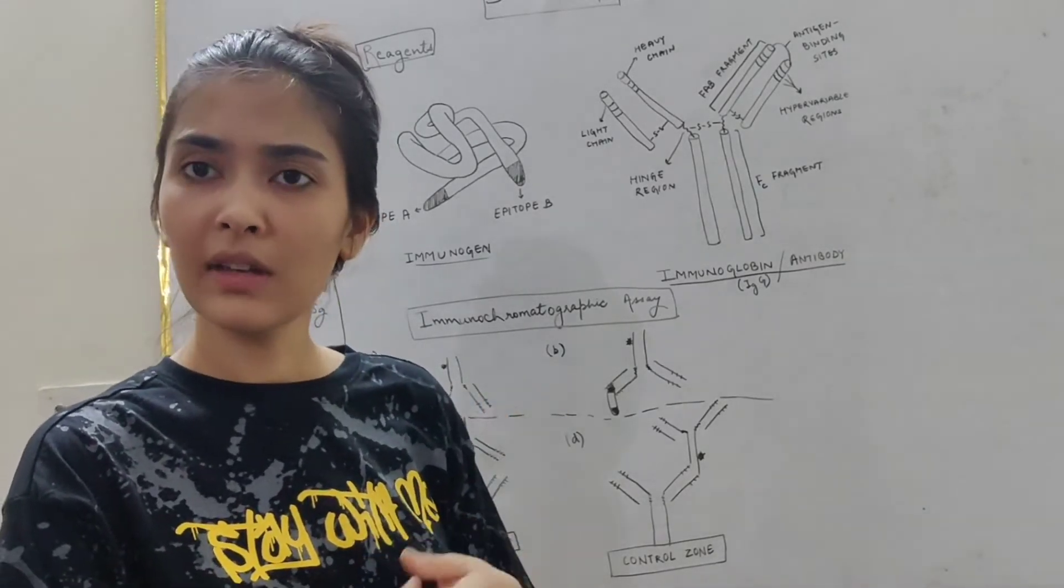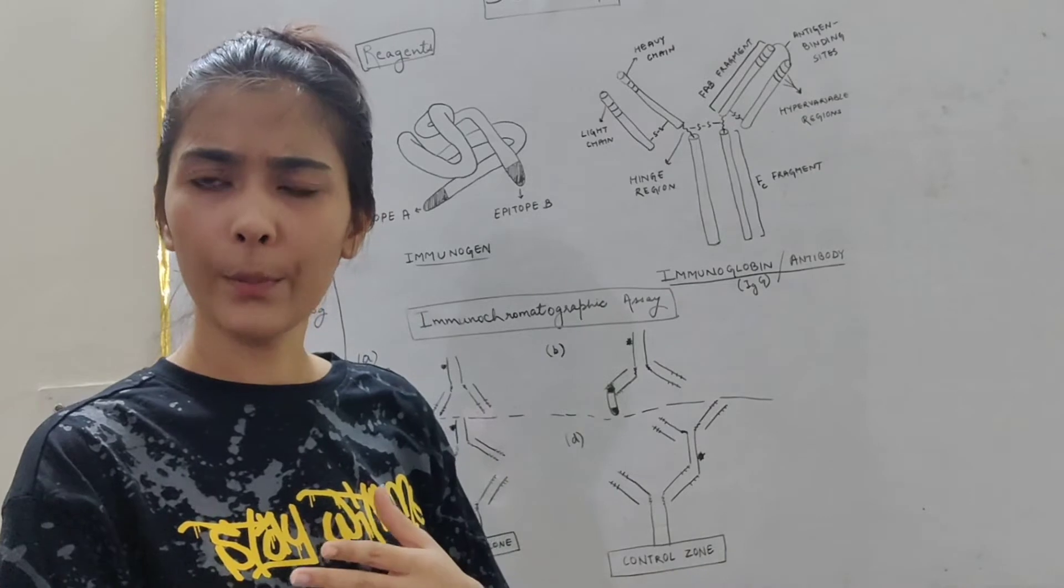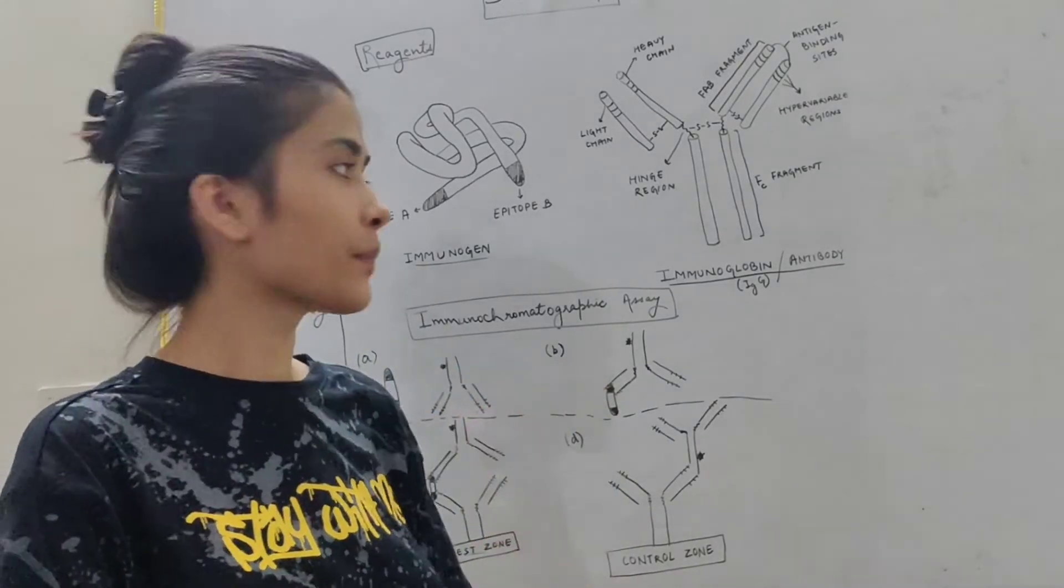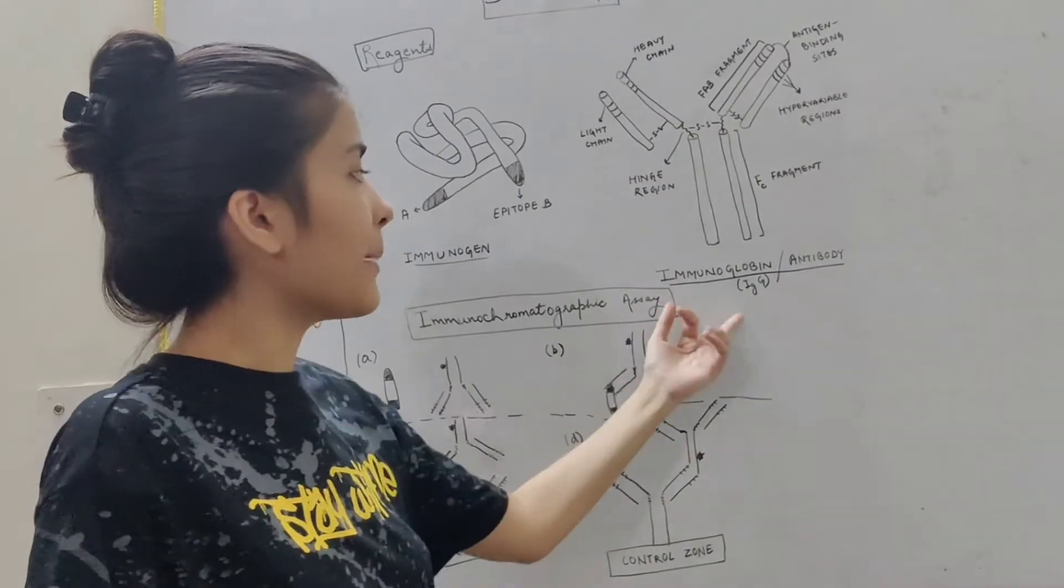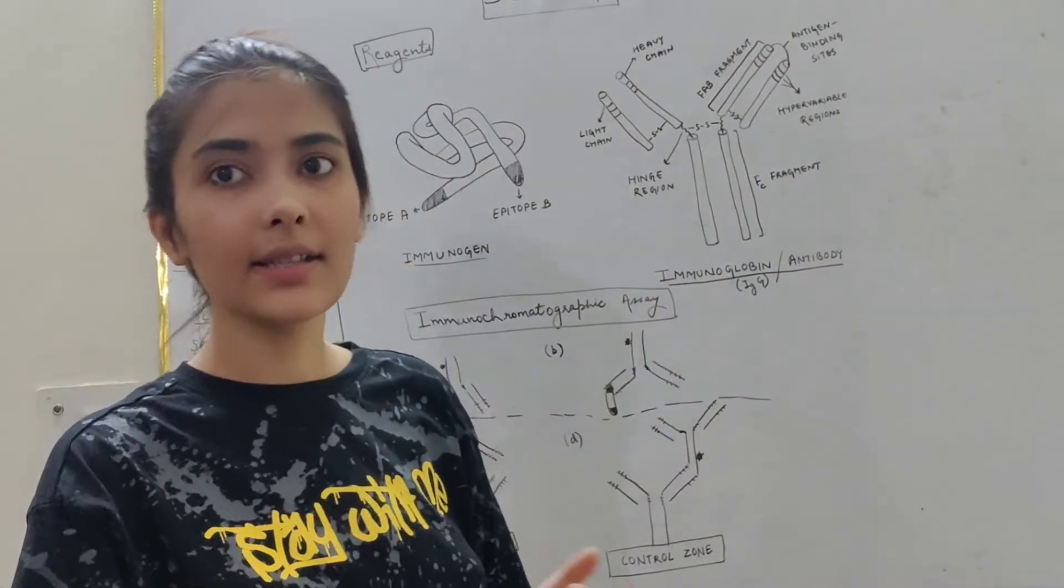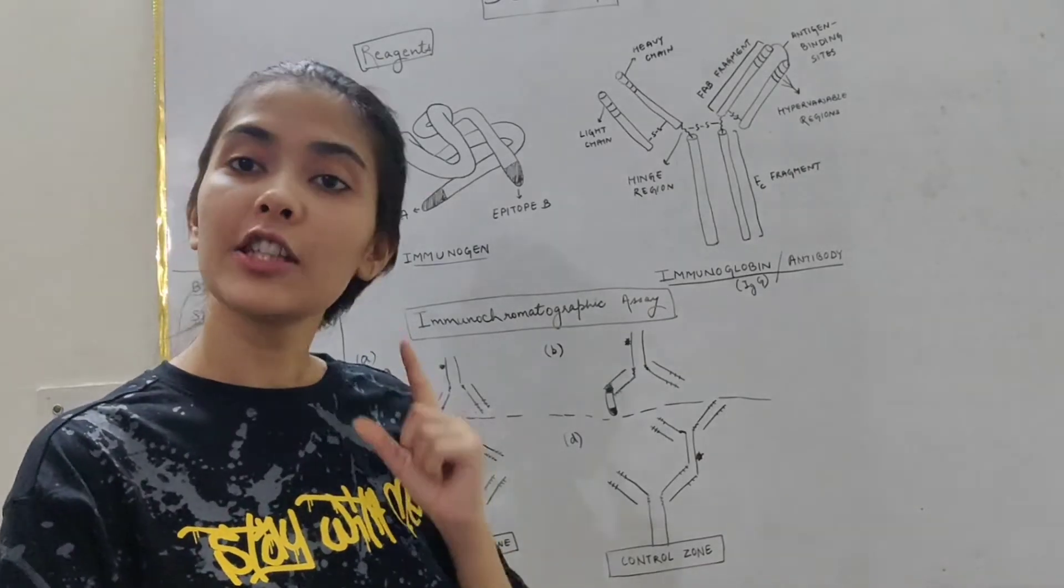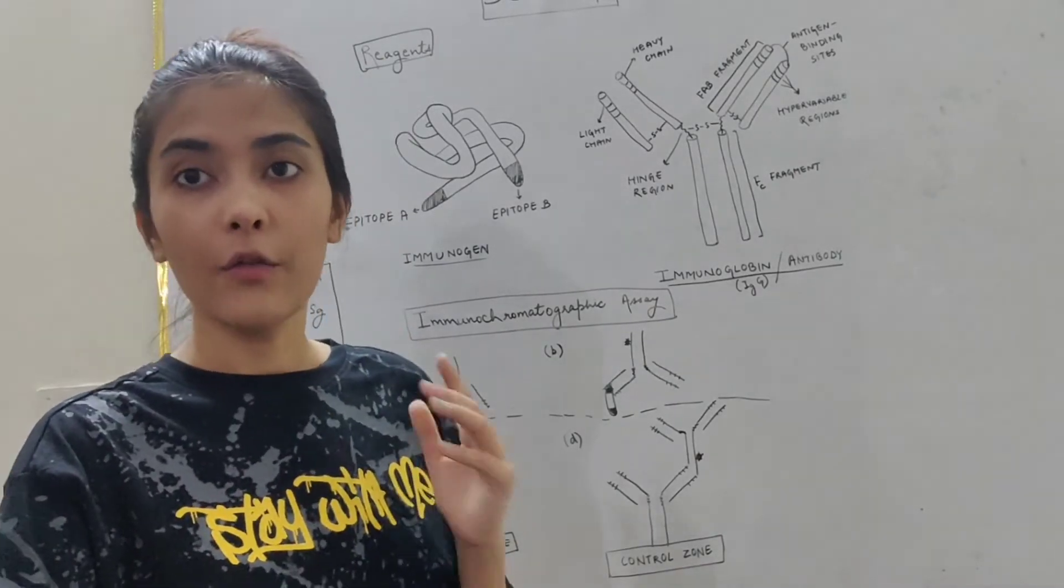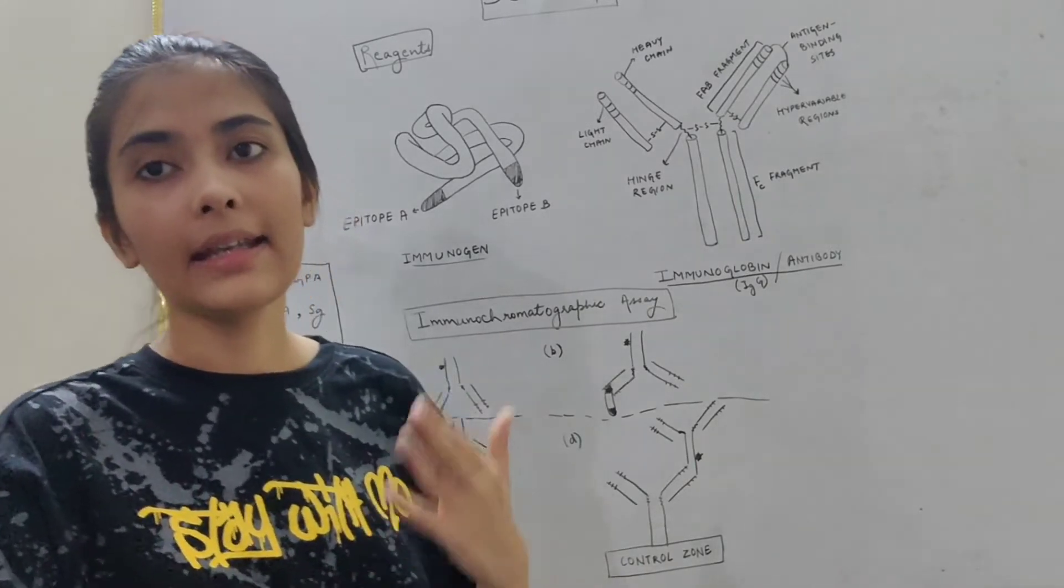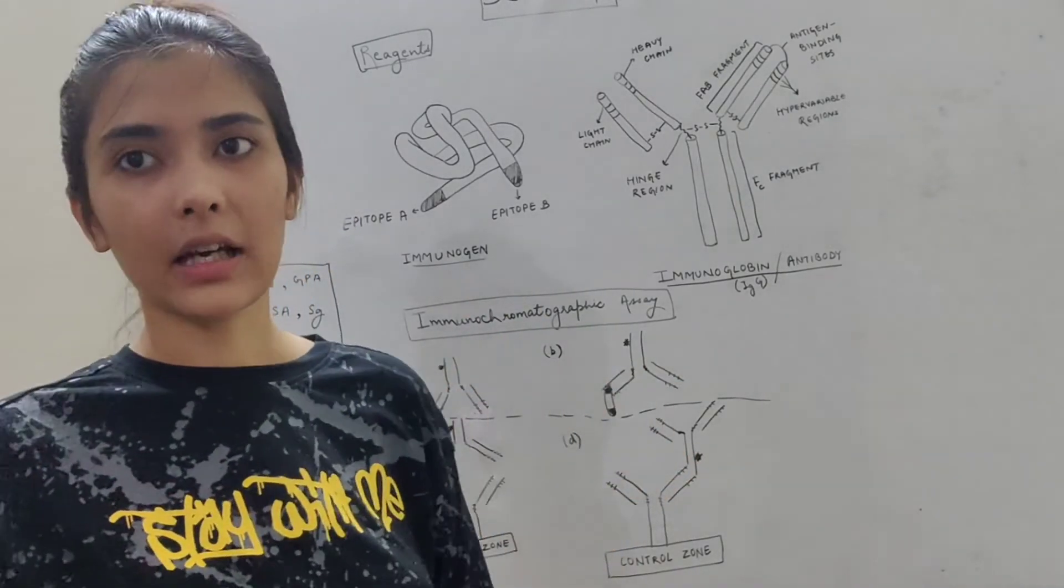IgA, one and two. IgG, one to four. IgM, IgE, IgD. Basically IgG is most abundant antibody present in our body. And IgM is the antibody which is produced as the primary response when any foreign antigen invades our body.